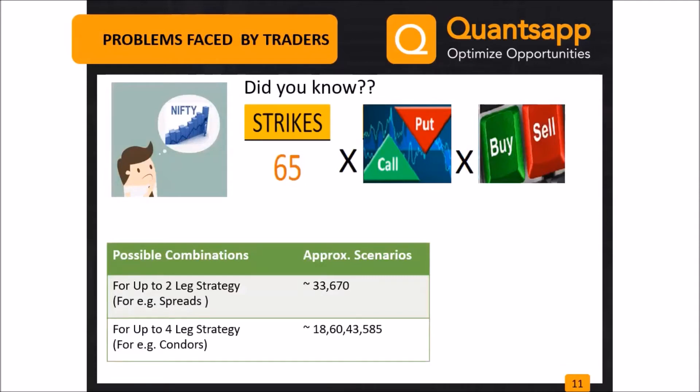Now if we had to form a four-leg strategy like a Condor, you would be shocked to know that the possible number of scenarios goes beyond 18,60,60,000,000 plus — over 18 billion possible combinations.